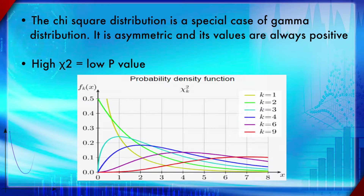If you have a small degree of freedom — meaning a small sample size — then it is a distinctly L-shaped distribution. When your degree of freedom increases, it becomes a bit more spread toward the right side of the distribution. It only depends upon the degree of freedom, and like the gamma distribution, it is always positive.